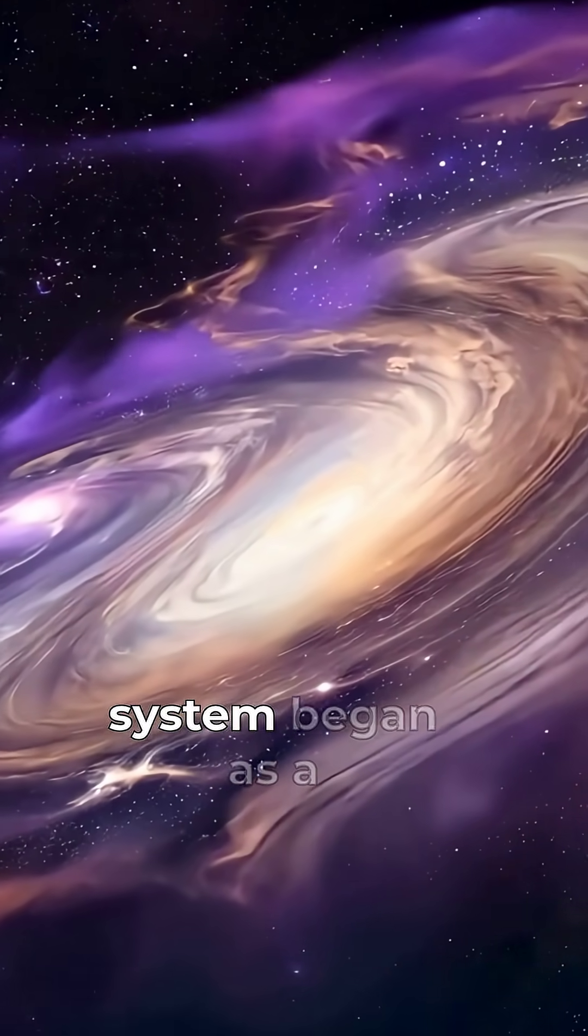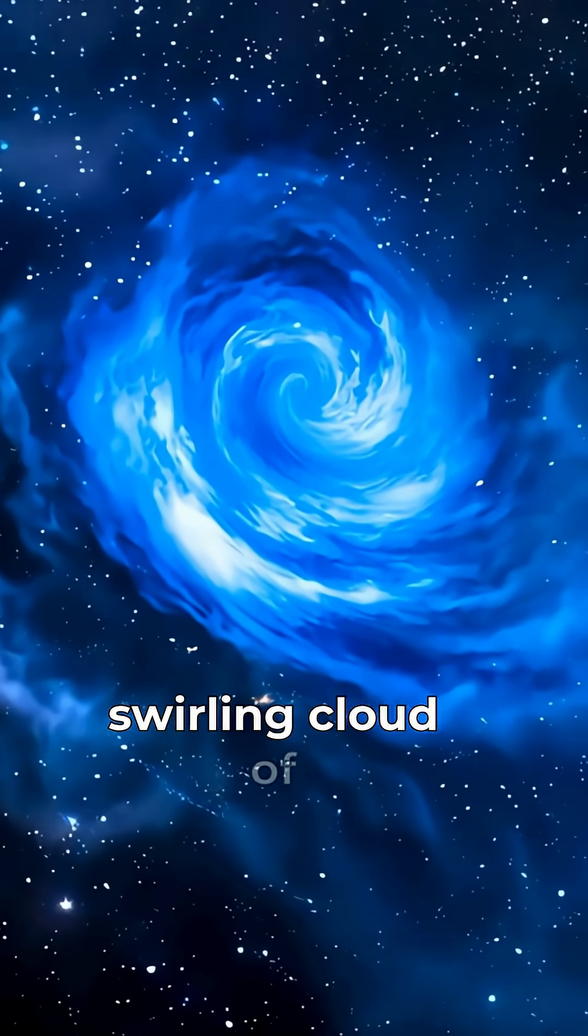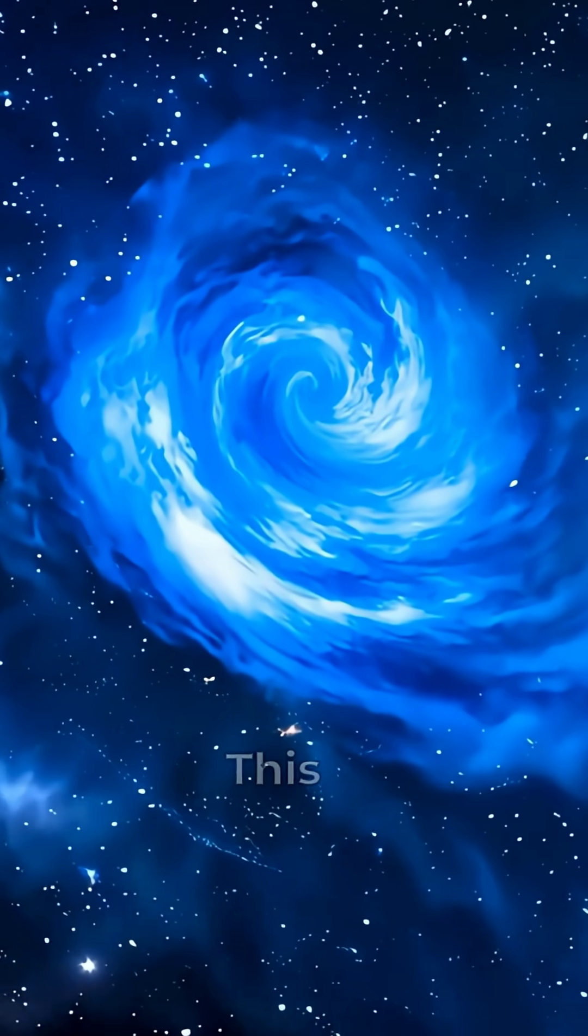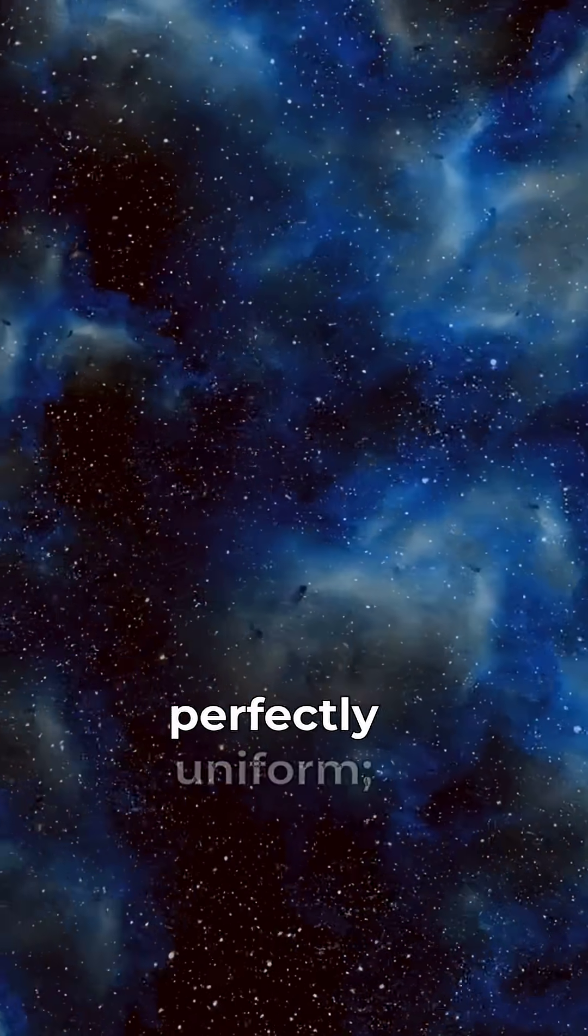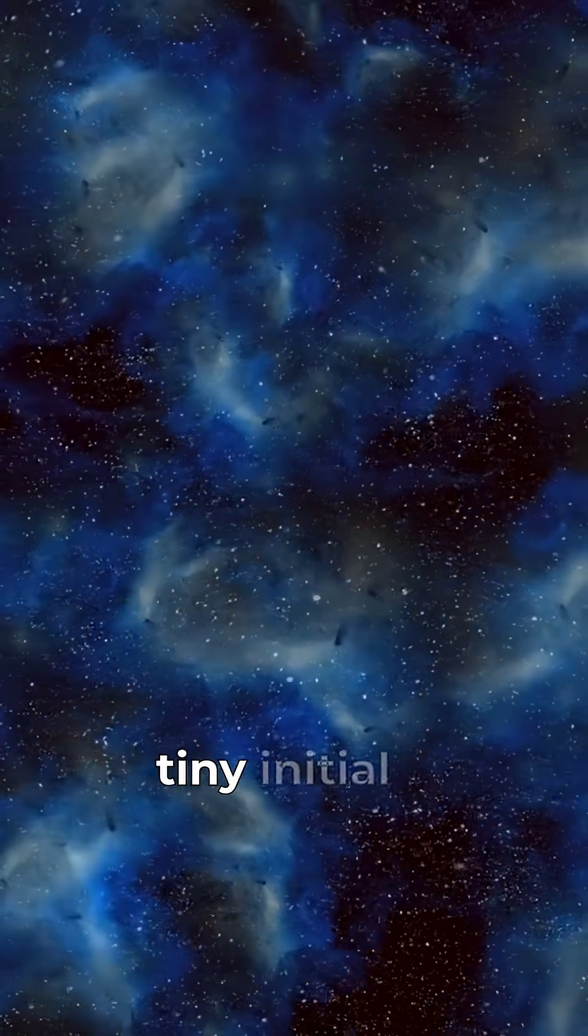Our solar system began as a vast swirling cloud of gas and dust. This cloud wasn't perfectly uniform. It had slight irregularities and a tiny initial spin.